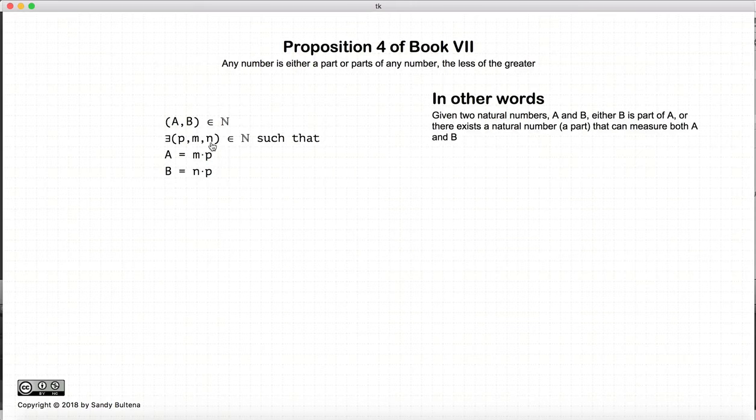So, in other words, if we have two numbers, A and B, two natural numbers, there exists a P, M, and N, where these are also integers, such that A is equal to M times P, and B equals to N times P. And that is essentially what he's trying to prove, although he continues to use part and parts. But this is effectively what we're going to be demonstrating in this proposition.